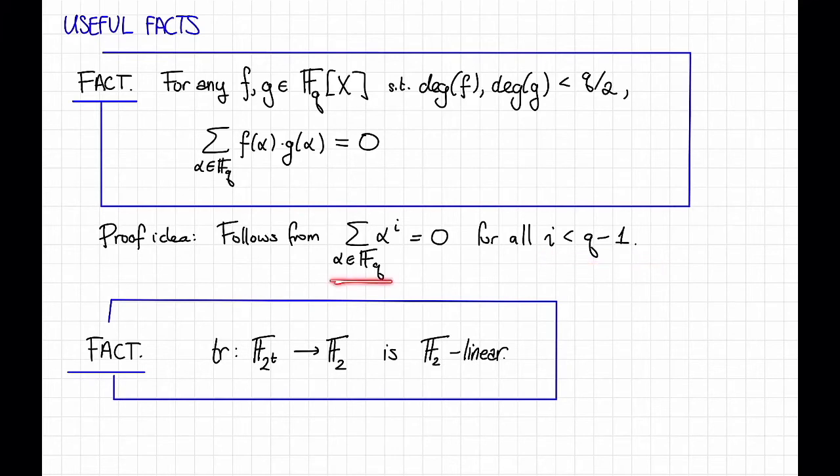The fact that we've seen before is that for all i strictly less than q minus 1, the sum over alpha in fq of alpha to the i is equal to 0. Now this just follows from that fact by observing that f times g is a polynomial of degree strictly less than q minus 1, because both of these have degrees strictly less than q over 2, and then we can break up each term linearly and apply this fact. Okay, so that's the proof idea for this fact.